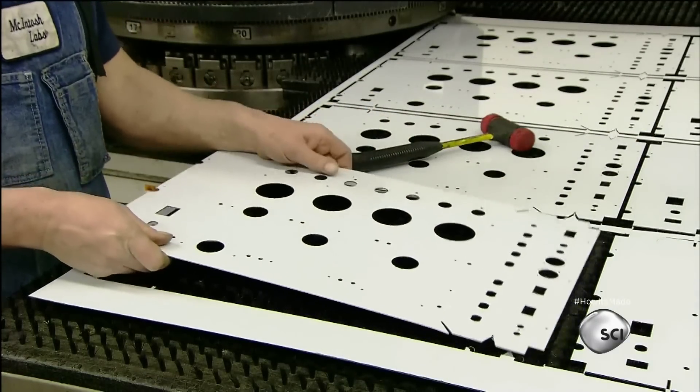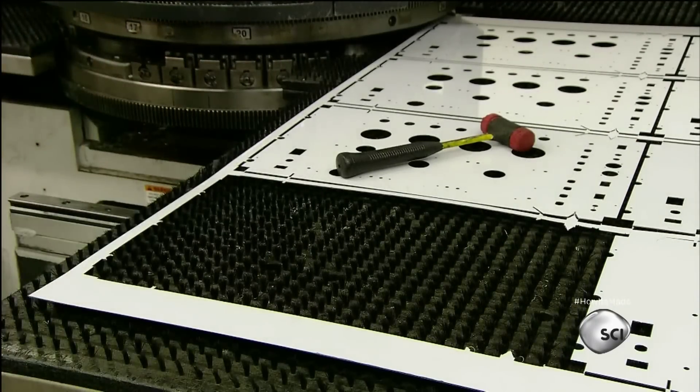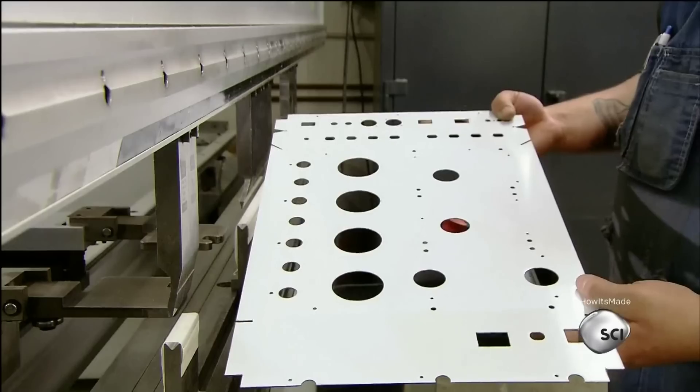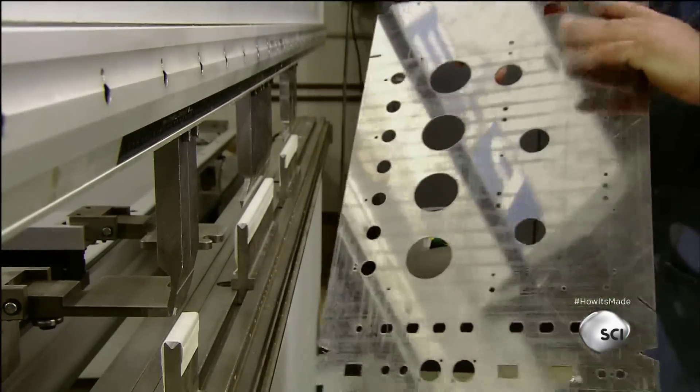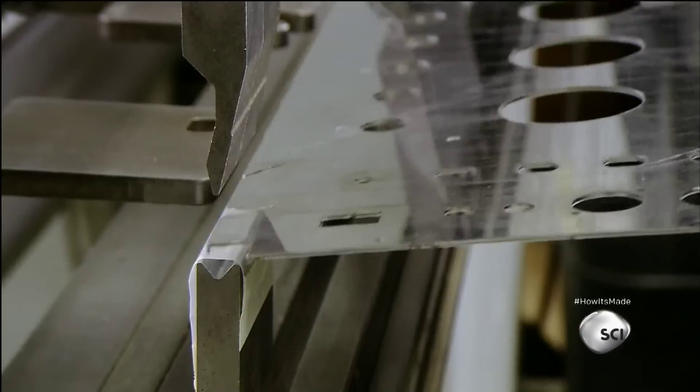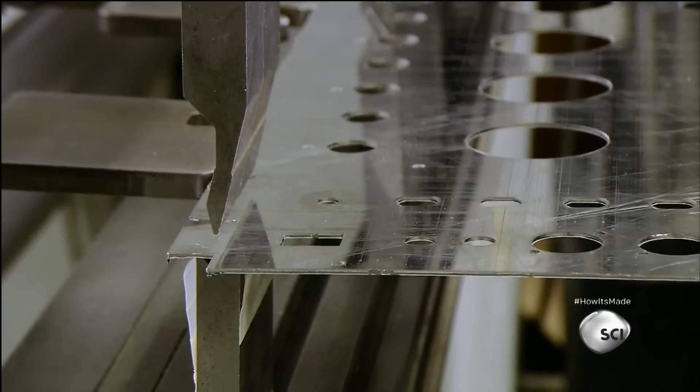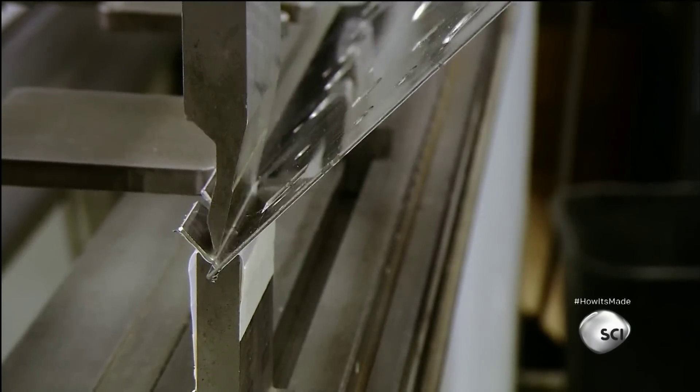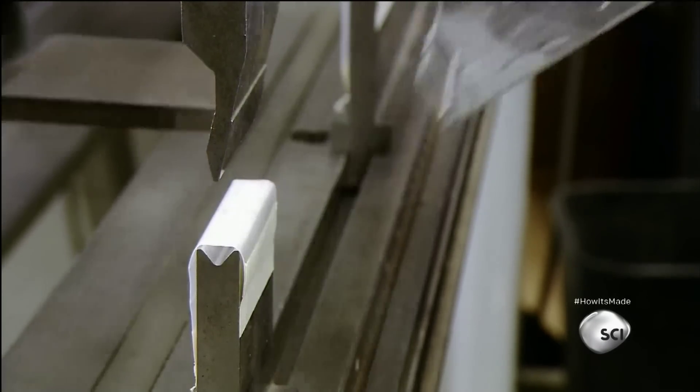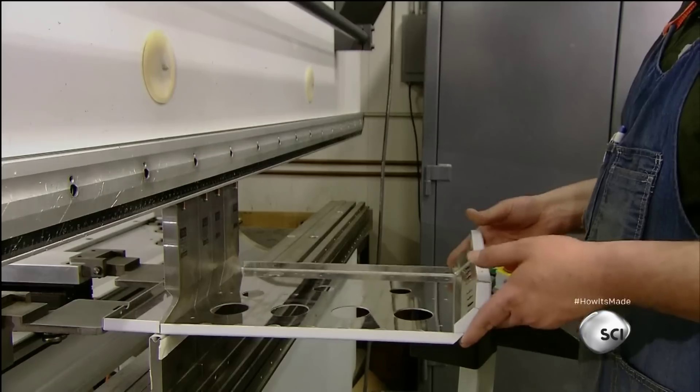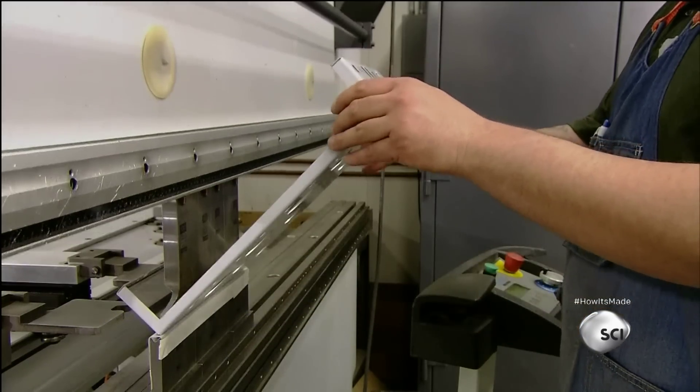The press prepares a chassis per sheet. Workers separate them with a few strikes of a mallet. Then they place them, one at a time, in a bending machine called a press brake. Once they position the sheet with the help of metal guides, they activate a foot pedal, releasing 90 tons of pressure to bend the edge of the sheet.